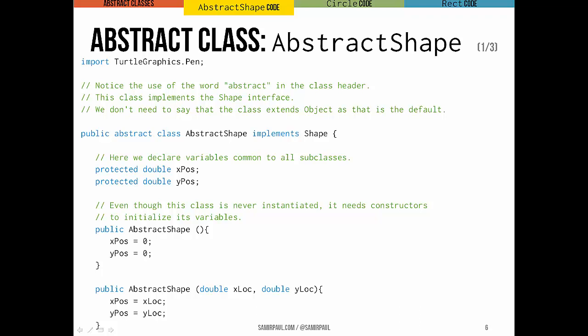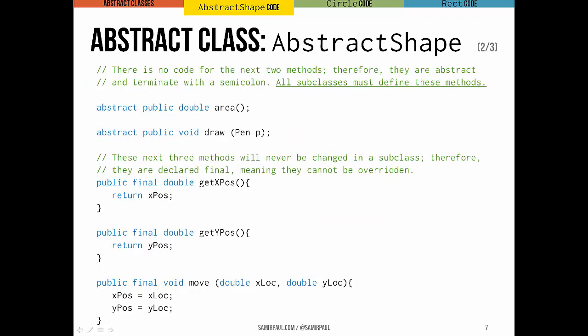Okay, so here we have the beginnings of our AbstractShape class. You can see it's declared as an abstract class, and it implements the Shape interface. We don't have to say that it extends Object, because that's just the default. All classes by default extend Object. So here we declare a bunch of variables that are going to be common to all subclasses. The subclasses themselves will add their own instance variables. For instance, Circle will add a radius, and Rect will add a width and a height. We'll have a constructor, and even though we're never going to actually instantiate an abstract class object, we still have to have constructors that initialize the variables. And you can see we have an overloaded constructor there as well.